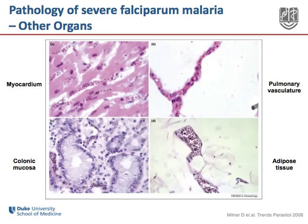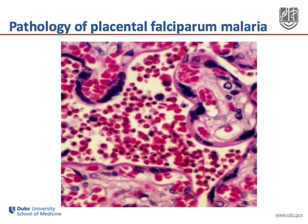The sequestration of infected red blood cells can be seen in a variety of tissues, including myocardium, colonic mucosa, pulmonary vasculature, and adipose tissue. This phenomenon can also be visualized in the placenta. In areas highly endemic for plasmodium falciparum, pregnant women can experience the distinct syndrome known as placental malaria, in which infected red blood cells adhere to extracellular ligands present in the placenta, causing local inflammation with adverse effects including intrauterine growth retardation and low birth weight.